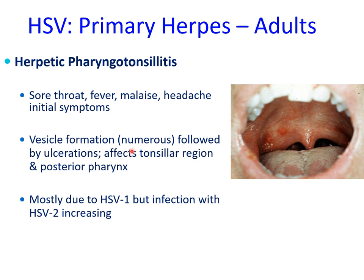In both children and adults, by the time the patients present to you, you are unlikely to identify any vesicles because these are usually quite fragile and rupture quite quickly, leaving ulcerations. So when patients present, you are more likely to identify ulcerations as opposed to vesicles. Most primary herpes infections in adults are caused by herpes simplex virus 1, but infection with type 2 is increasing primarily because of oral sexual practices.